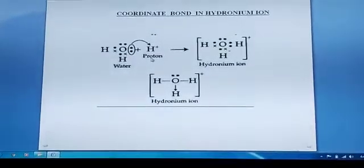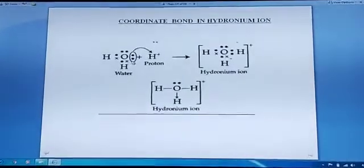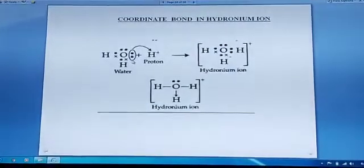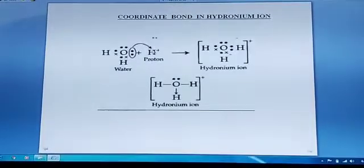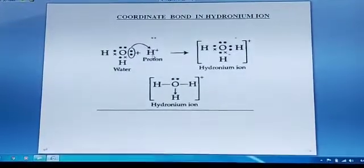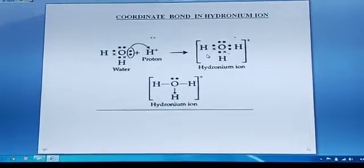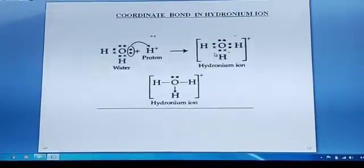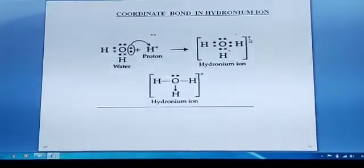When this proton, or you can say hydrogen ion, approaches water, this lone pair of electrons can be donated to the proton. And this is the resultant ion form, but with a plus charge.